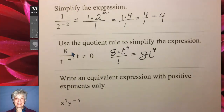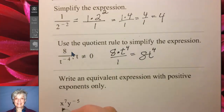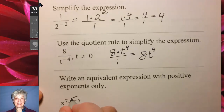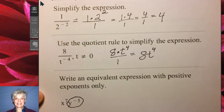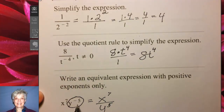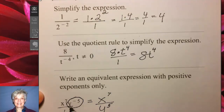Down here: write an equivalent expression with positive exponents only. Well, x to the 7th is very happy being where it is. Y to the negative 5 is unhappy — you could almost say it has a very negative personality. To make y happy, y to the negative 5 sends it down underneath. It's understood this is over 1, so you're just taking y to the negative 5 from the top and moving it down here as y to the positive 5.